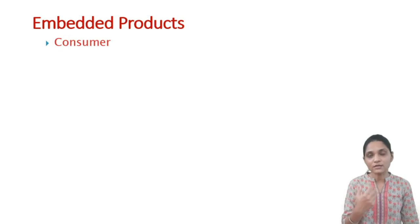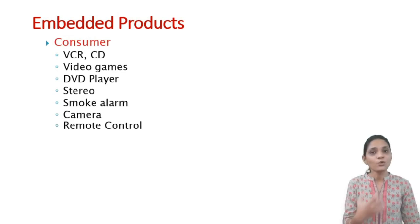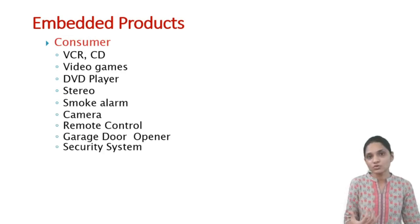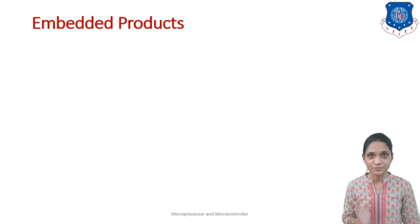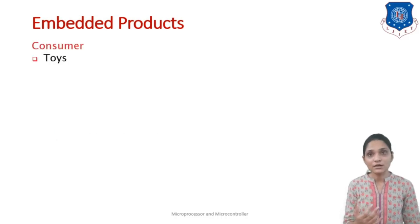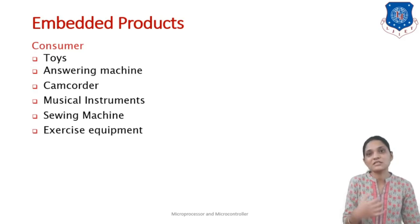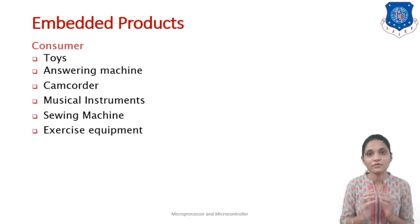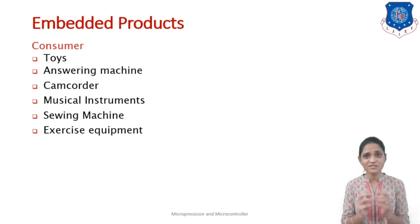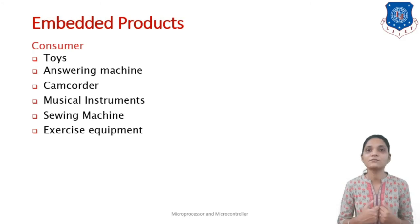Consumer products such as VCRs, CDs, video games, DVD players, stereos, smoke alarms, cameras, remote controls, garage door openers, and security systems are all embedded. Toys, answering machines, camcorders, musical instruments, and exercise equipment are also embedded. Wherever you see a digital system, it is an embedded system because it requires some control.